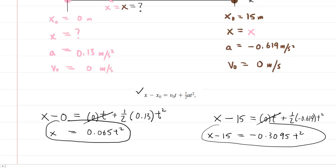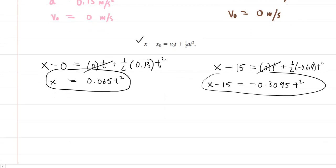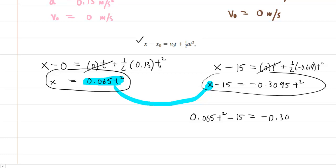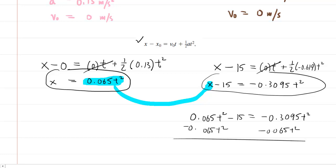We now have a system of equations. We solve for time by substituting the expression for x from the girl's equation into the sled's equation. So we have 0.065 t squared minus 15 equal to negative 0.3095 t squared. Subtracting 0.065 t squared from both sides of the equation gives us negative 15 on the left side.